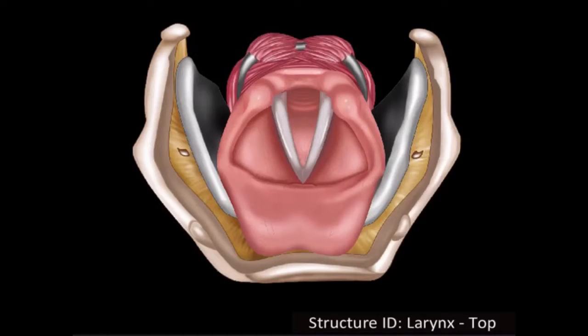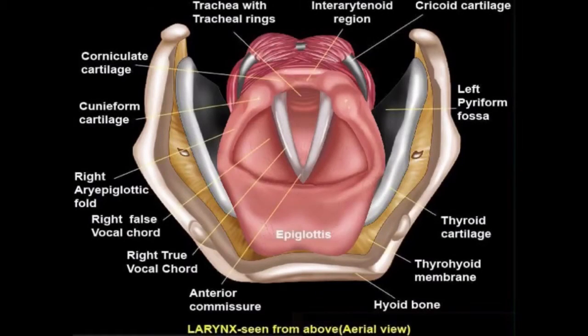This is an animated image of the larynx seen from above. All the parts have been marked here for you to get a brief orientation of the structures which are involved in the formation of the larynx.